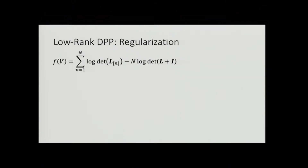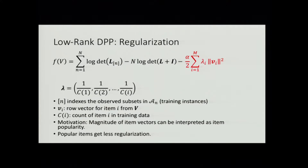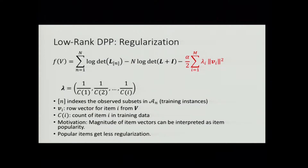Now let's look at how regularization is performed in this low-rank DPP framework. The first term is just the log likelihood, and the second term is from the normalization constant. We've added an L2 regularization term defined in terms of item popularity — the magnitude of the item trait vector is interpreted as item popularity, so popular items get less regularization because we have more observations about them in the data. One issue is that alpha, our regularization hyperparameter, has to be set appropriately; the model is relatively sensitive to the optimal value of alpha. The common way to find alpha is to train a series of models for different values and perform a line search, which can be expensive.